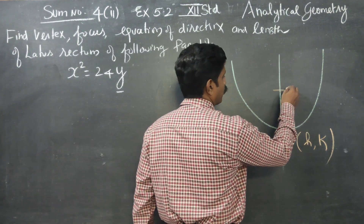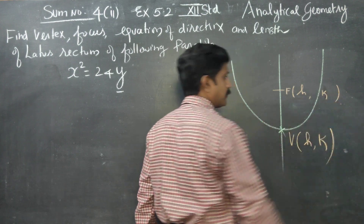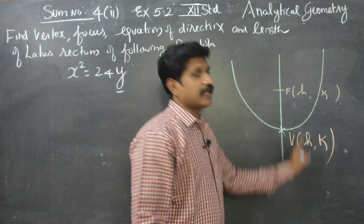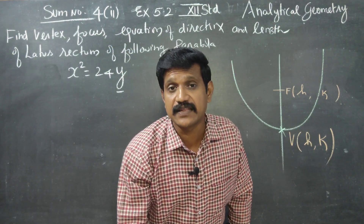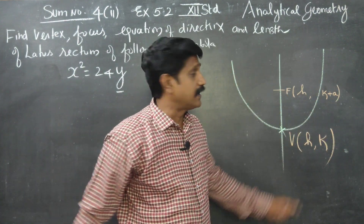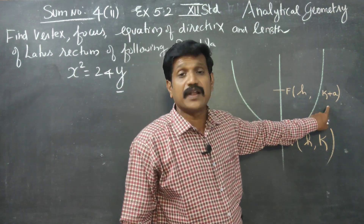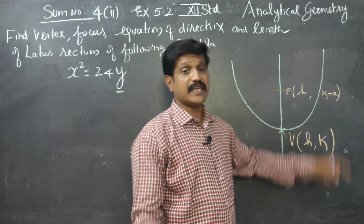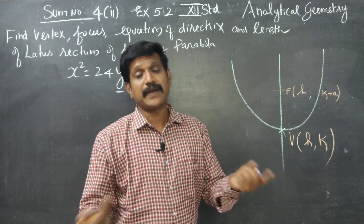Now moving to the focus — again h, k. Based on the y-axis, the number changes. For x-axis parabolas the second coordinate uses plus a for upward and minus a for downward.